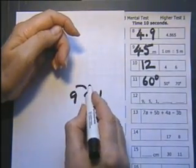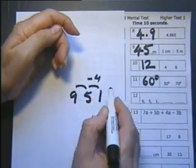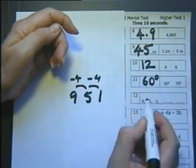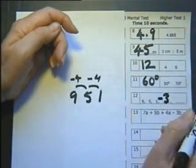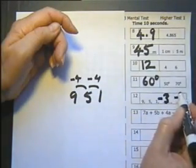So if we're going to go down another 4, we're going to end up at minus 3, and then down another 4, we're going to end up at minus 7.